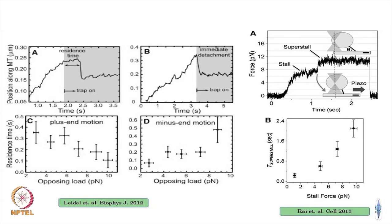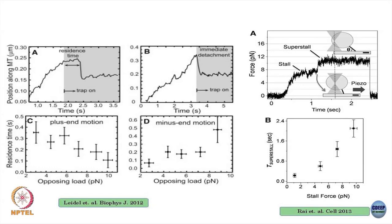You do this experiment thousands of times and get an average: depending on the force you are applying with the optical trap, how long does this motor stay bound? For kinesin, the more load — opposing force — you apply, the smaller the residence time. That is the expected result: if you pull on the motor opposite to the direction it wants to go, it comes off more often and stays bound for less time.